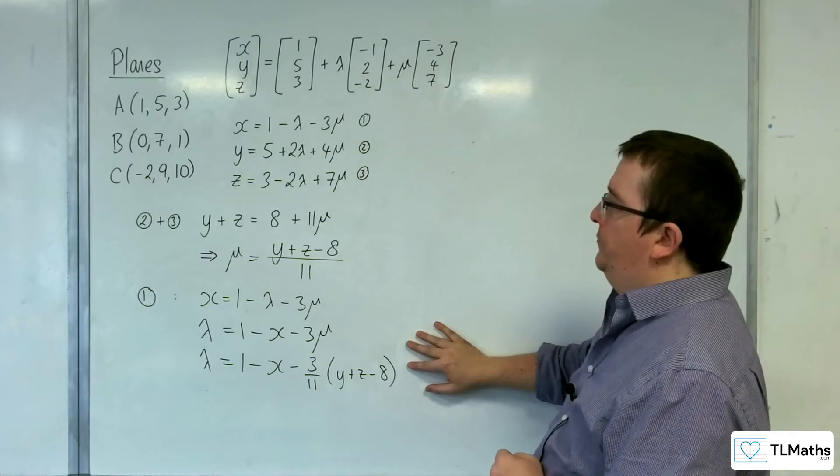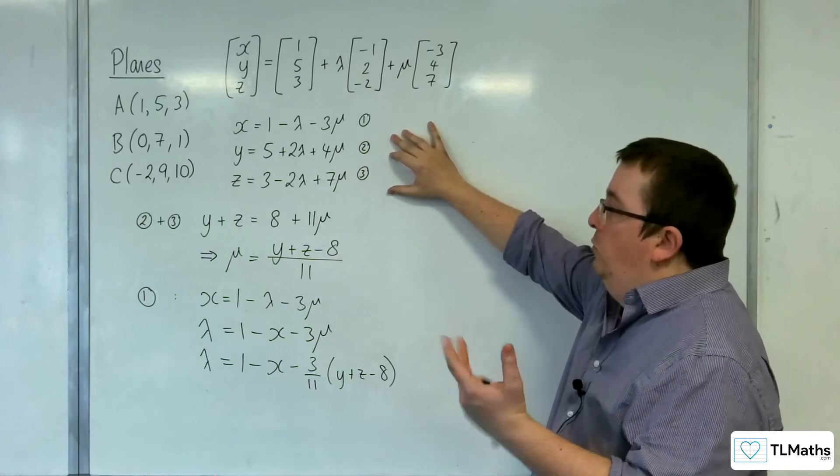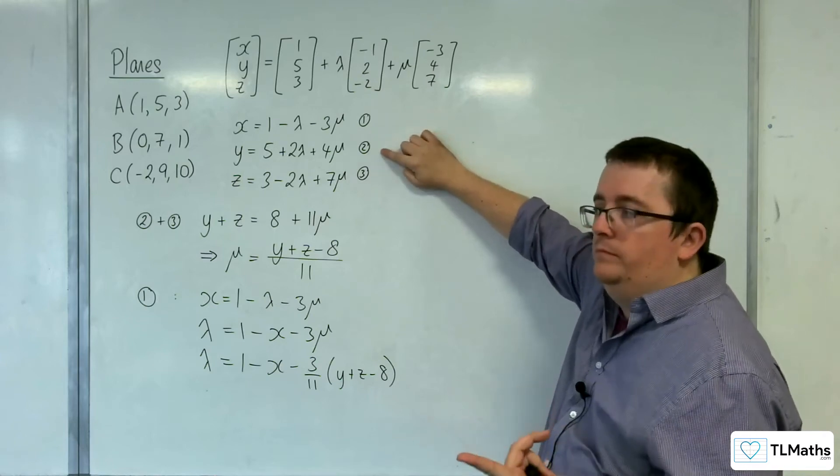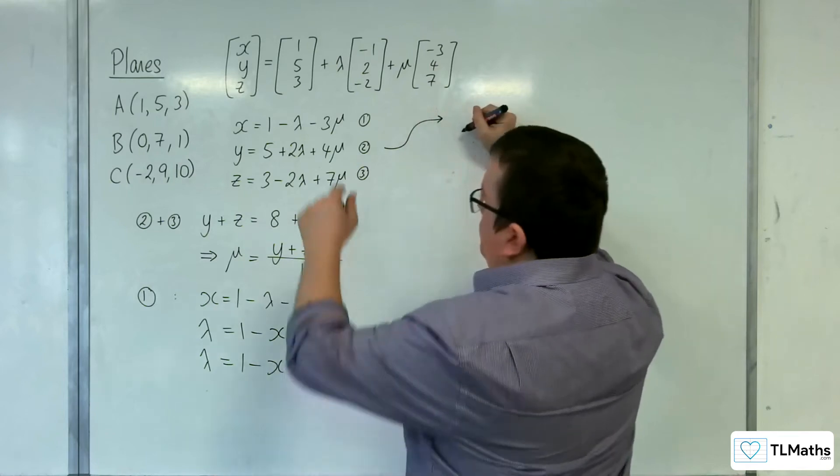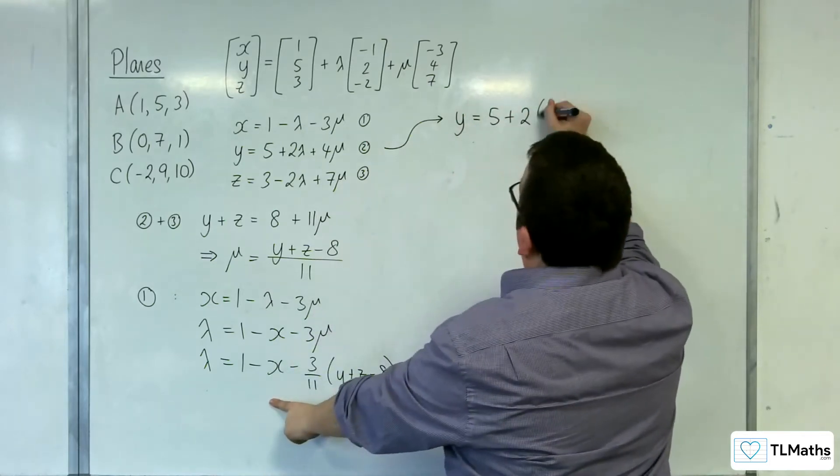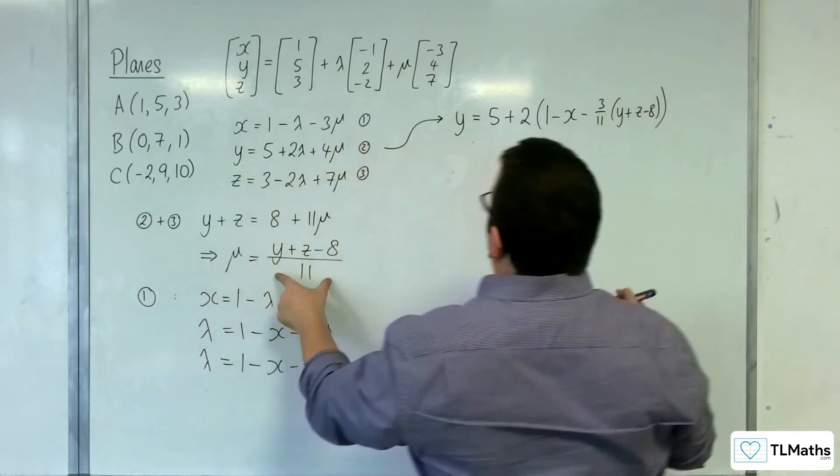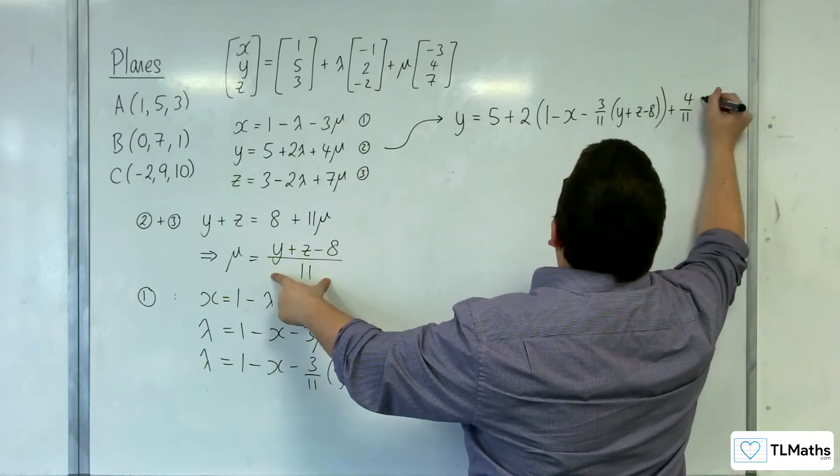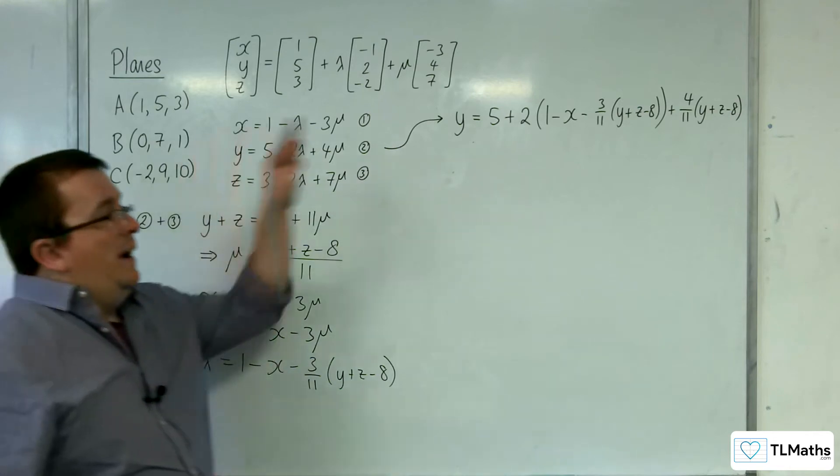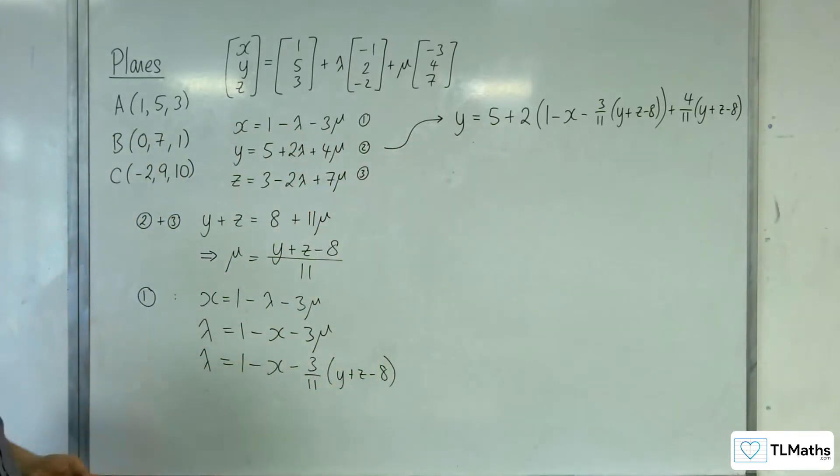So I could substitute both of those into one of these equations now. So well, I've used all three in getting to them, so it doesn't really matter which one I choose. So let's choose number 2, for example. So I could substitute the lambda and mu into this. y equals 5 plus 2 lots of lambda, 1 take away x, take away 3 elevenths of y plus z take away 8, plus 4 lots of mu, plus 4 elevenths of y plus z take away 8. And okay, I've now eliminated the lambdas and mu's. This is a Cartesian equation for the plane. It is obviously in an absolutely horrendous form at the moment.